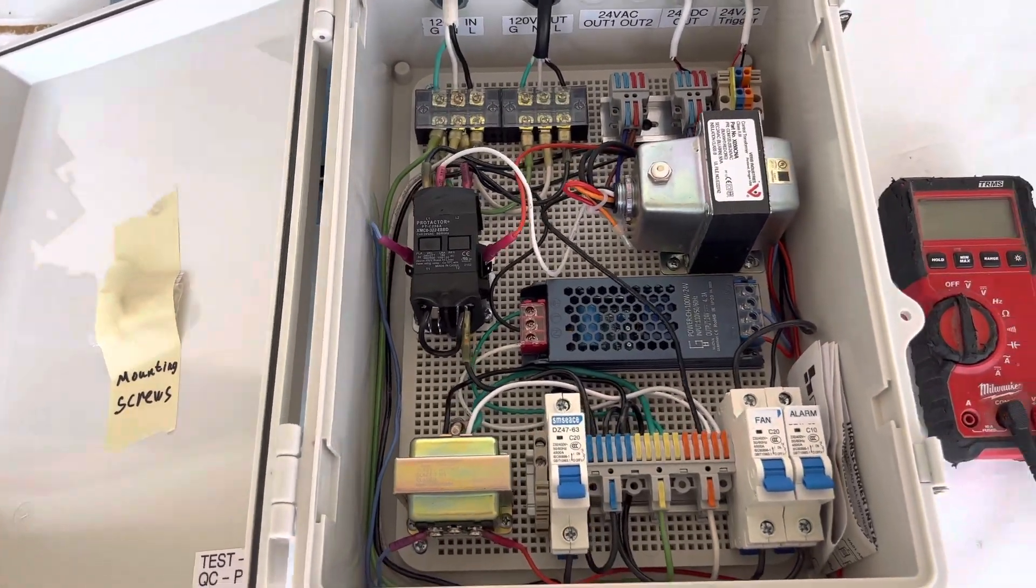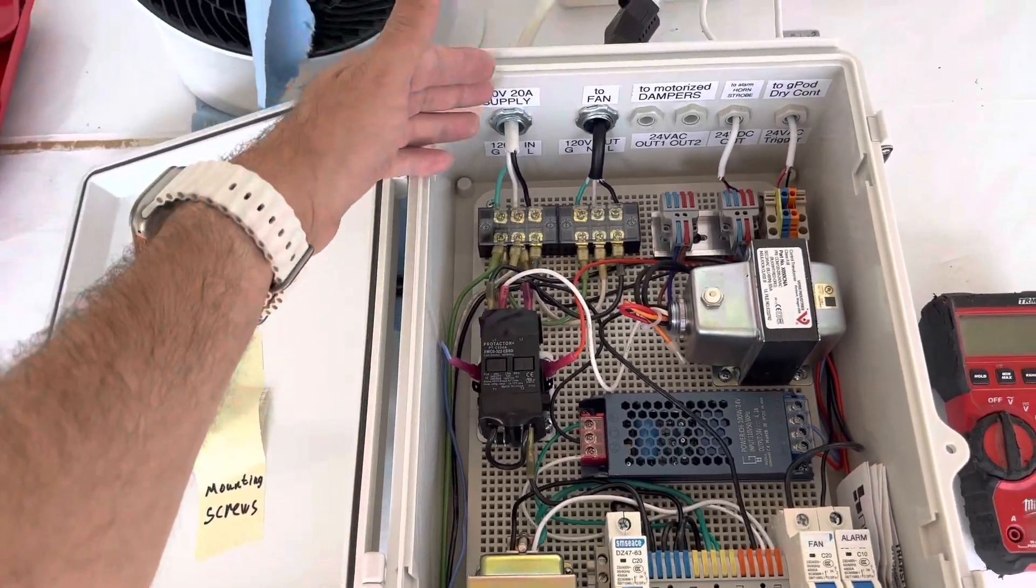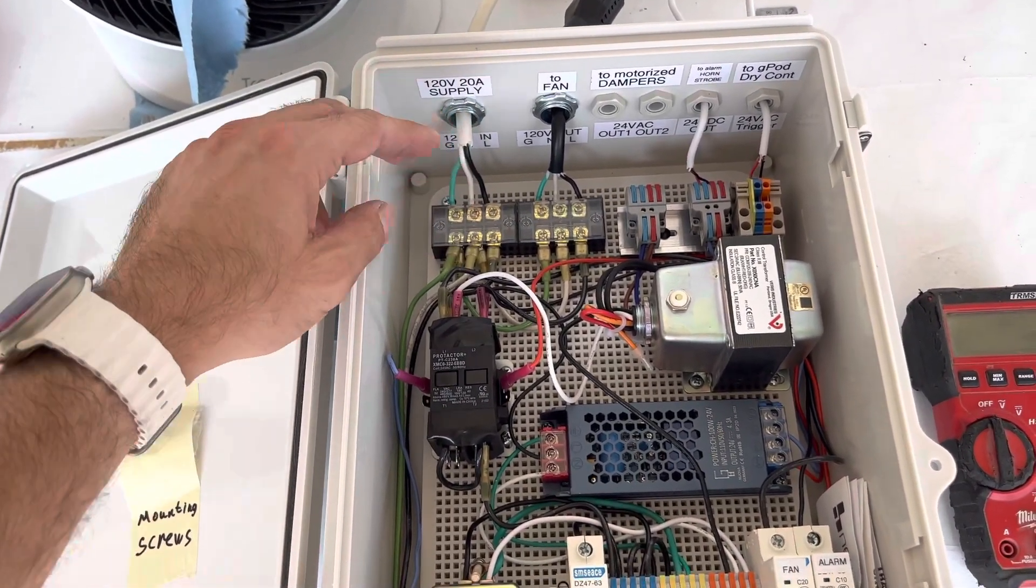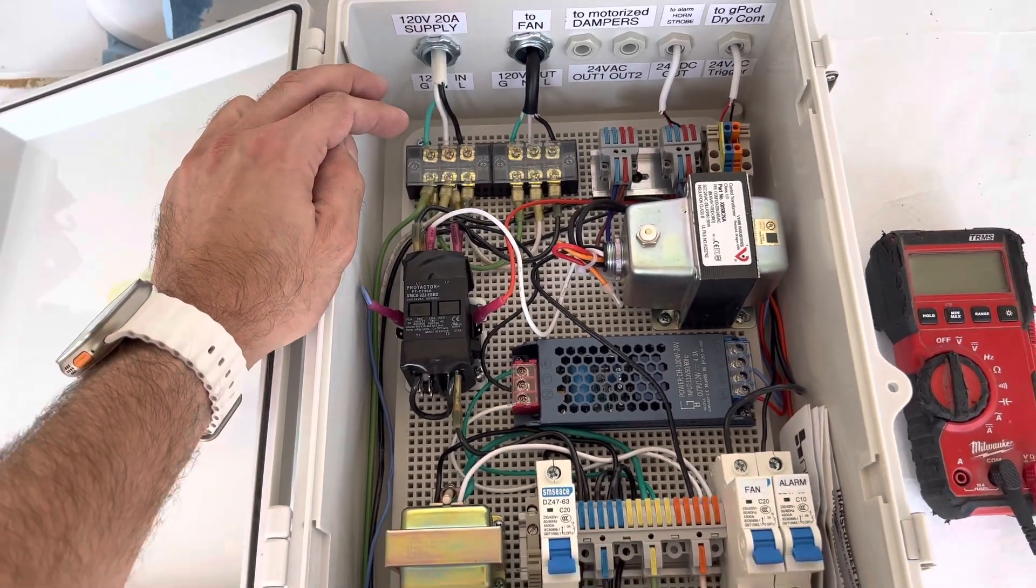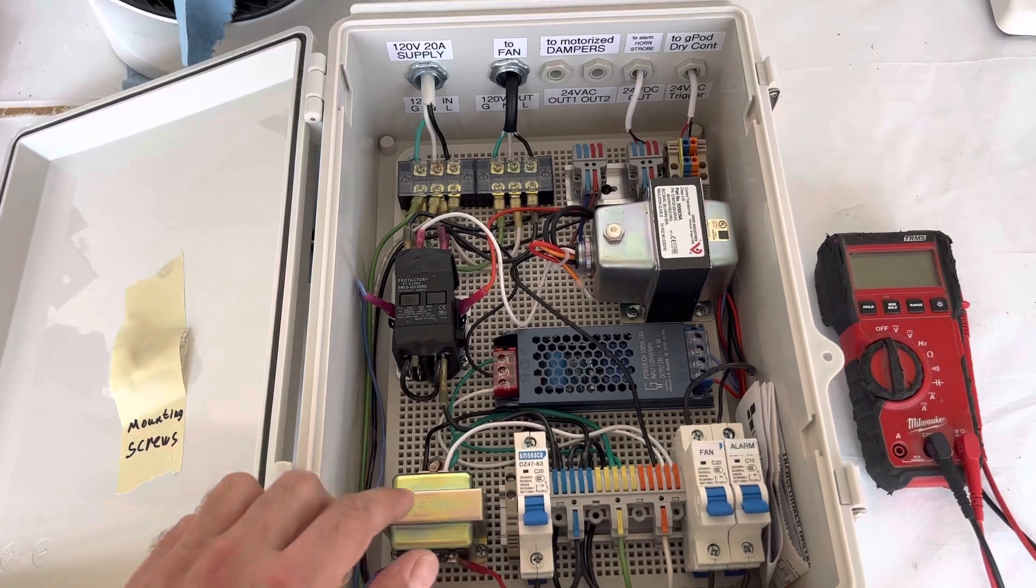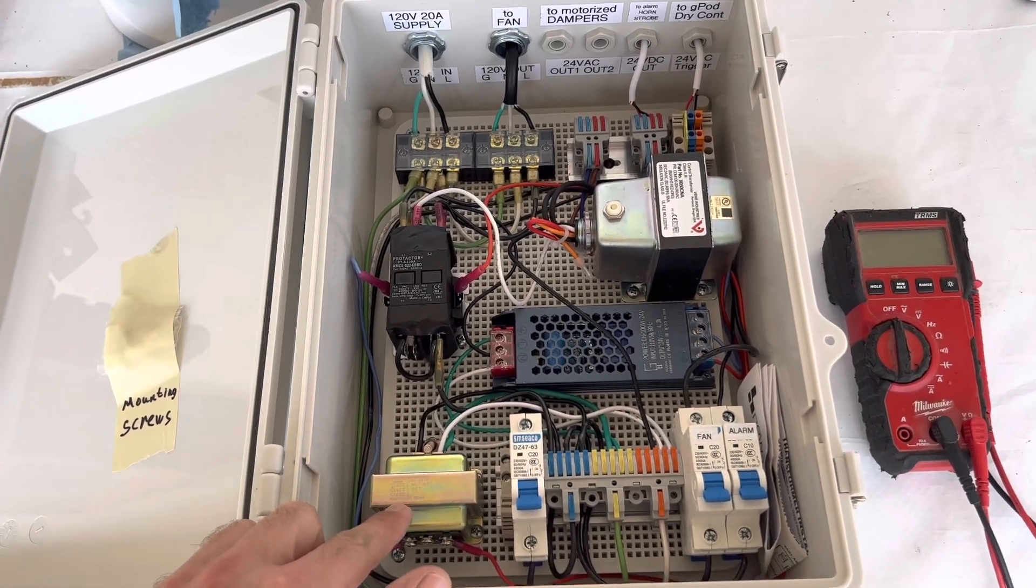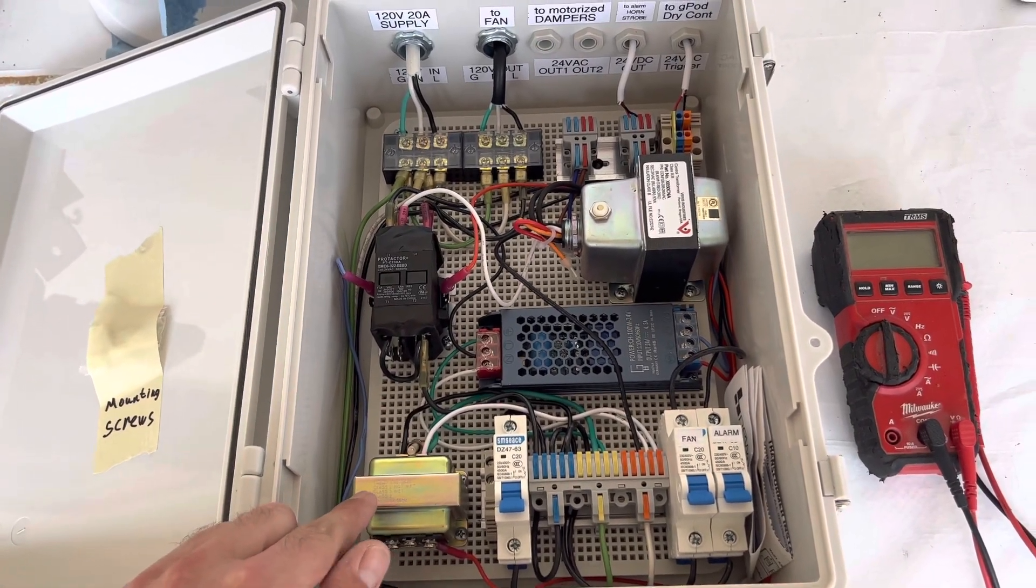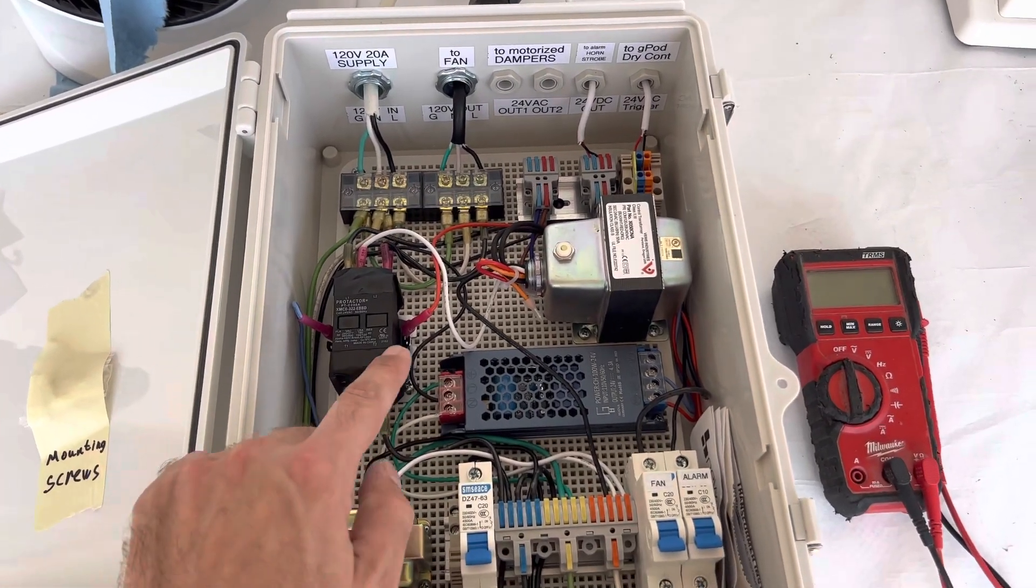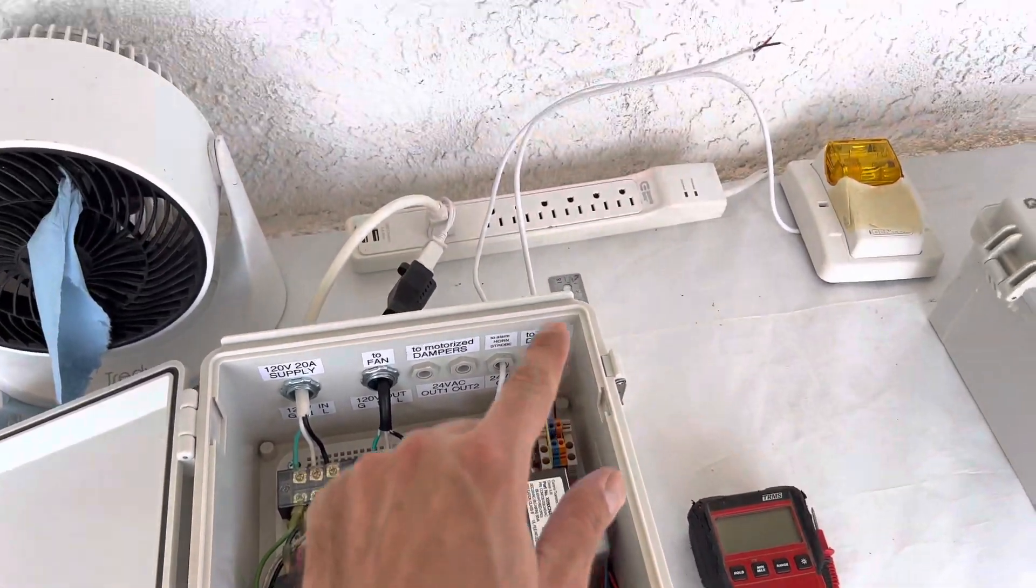There's a power supply that comes in - 20 amp, 120 volt - and it's feeding everything here. This AC 24 volt transformer is feeding this coil through the trigger.